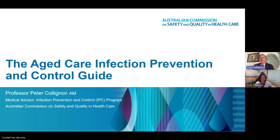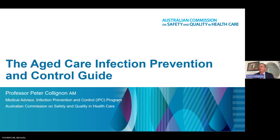Thank you very much for this opportunity to talk about these guidelines. By way of background, we have infection control guidelines for the healthcare sector, but they're mainly designed for the acute care sector — hospitals. The major difference with aged care is that it's where people live. They're not there for just short periods of time; it's their home, both in the community and in aged care nursing homes. So it was important that we came up with something more in tune with and practical for that situation.